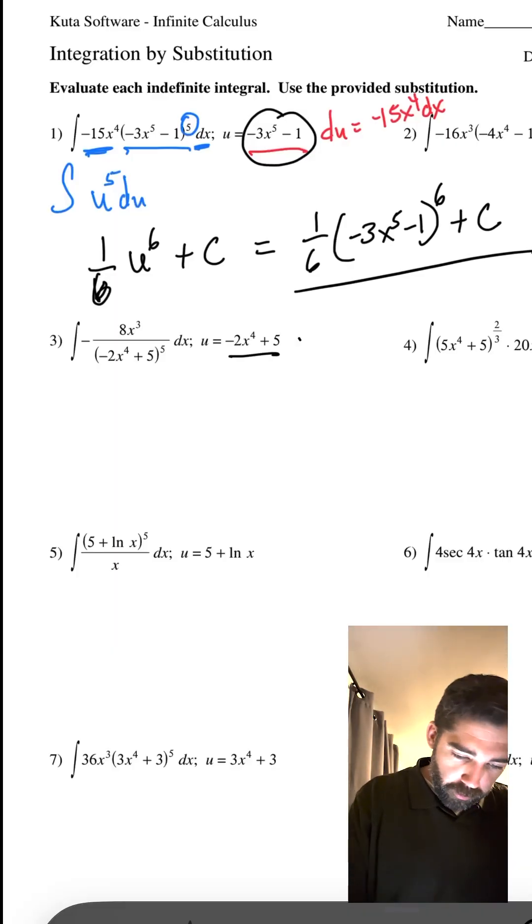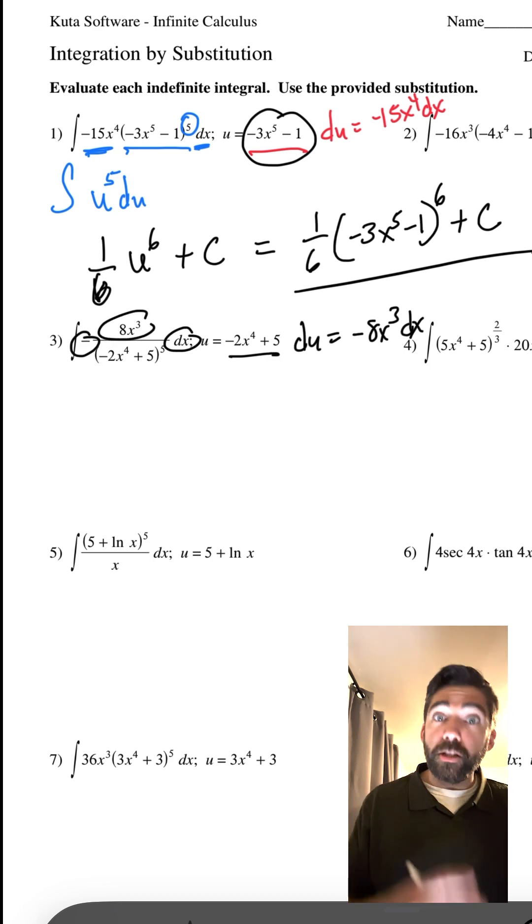Here's U. So what is DU? DU would be negative 8x to the third dx. Beautiful thing is, here's our negative, here's our 8x to the third, here's our dx. We have it.